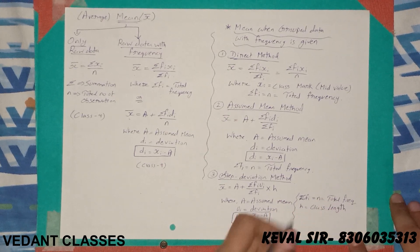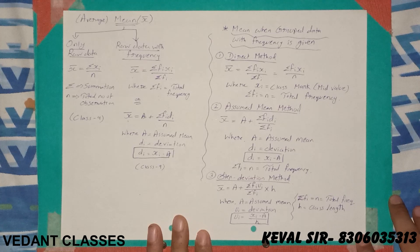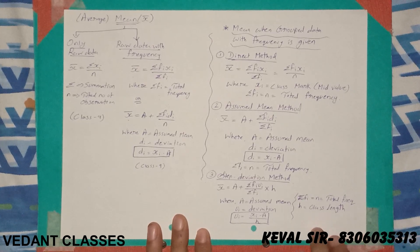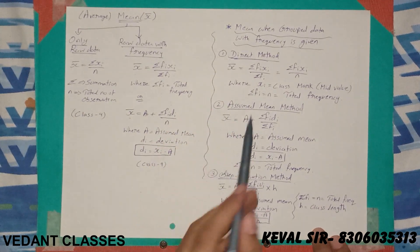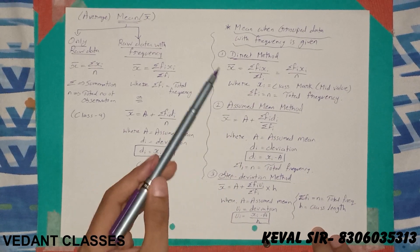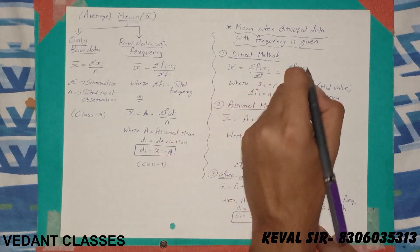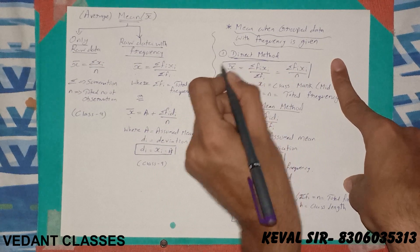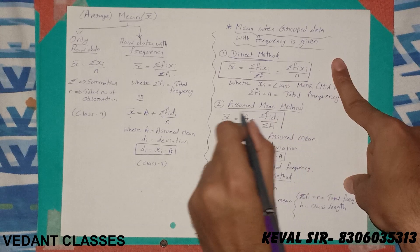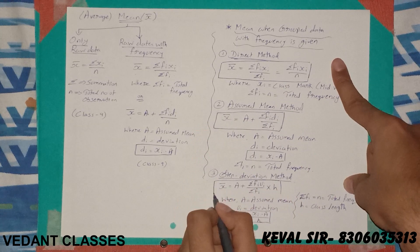So we have seen three methods to calculate mean for grouped data when frequency is given. We calculate mean using three formulas corresponding to these three important methods.